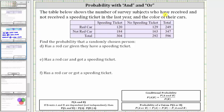Welcome back to part two. The table below shows the number of survey subjects who have received and not received a speeding ticket in the last year and the color of their cars. We're asked to find the probability that a randomly chosen person has a red car given they have a speeding ticket.